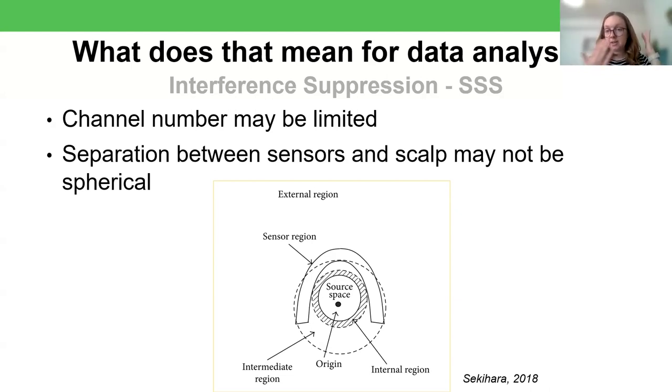Additionally, the separation between the sensors and the scalp may not be spherical. So you may not be able to place this sphere in between the brain and the sensors anymore, simply because most people's brains aren't spherically shaped. Most people's heads are elongated. And so if you try to place the sphere, you'll end up either including some sensors in the sphere or skipping out regions of the brain.